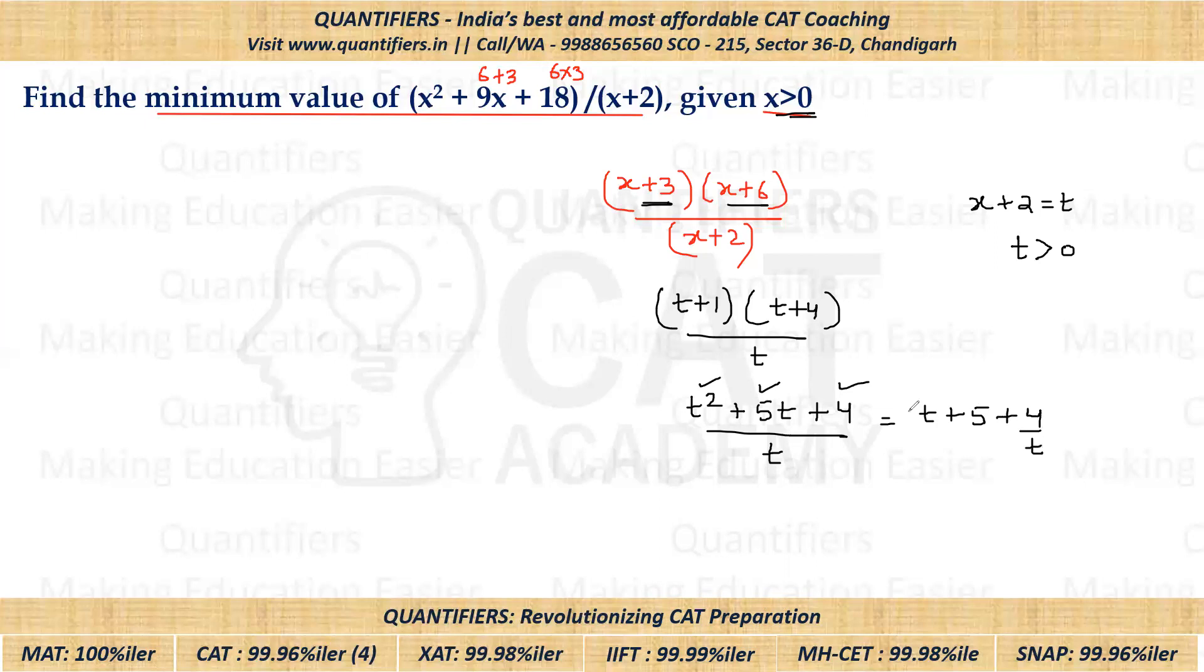Now students, 5 is constant here. Ultimately, I need to minimize the expression value. So I just need to minimize T + 4/T. Because 5 is anyway constant, it is not going to change.